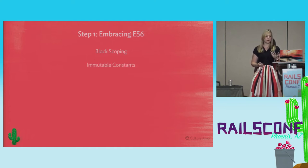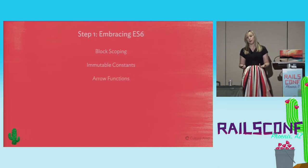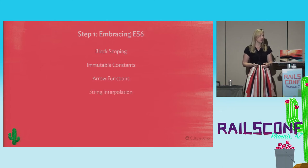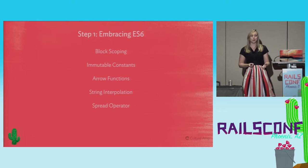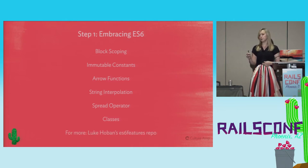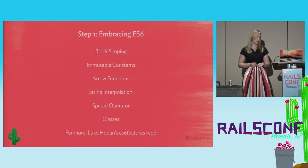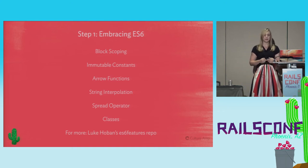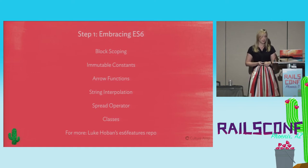ES6 fixed some issues: block scoping and immutable constants were introduced. We also had syntactic sugar — arrow functions, string interpolation, and the spread operator, all of which made our lives as JavaScript developers much easier. ES6 introduced classes, which some people love and some hate, and also promises, which had for a long time been part of jQuery but were now part of the core JavaScript code. There's a great repo by Luke Hoban if you want to see more information on the features.